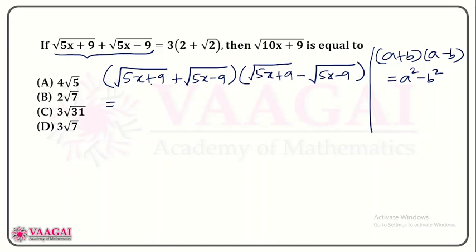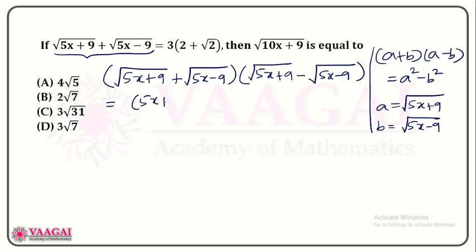We know that (a + b)(a − b) equals a² minus b². Here, in the place of a we have root of 5x plus 9, and in the place of b we have root of 5x minus 9. So a² gives us 5x plus 9, and b² gives us 5x minus 9.